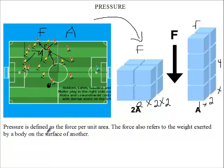So force per unit area is what we call pressure. In this case, the area over here is four because it is length times breadth. In this case, the area over here is two because it is length times breadth.